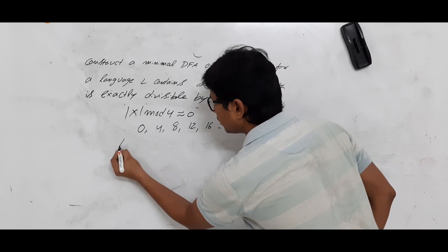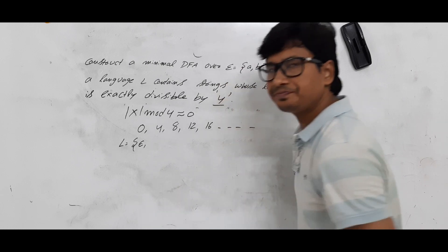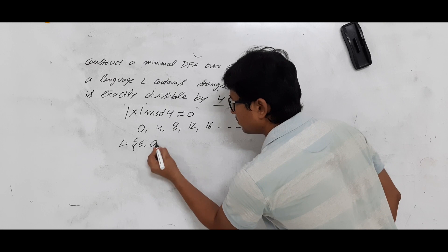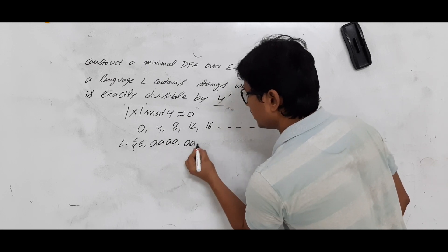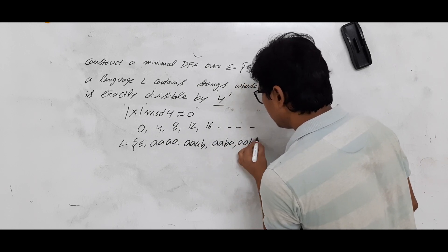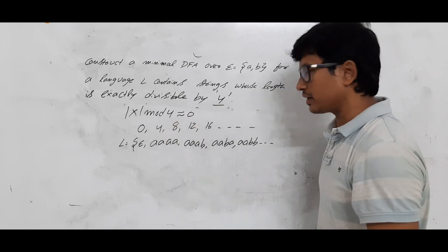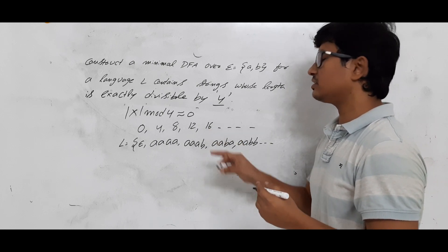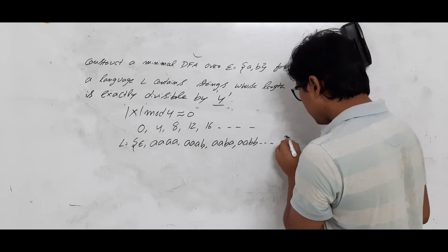The string of length 0 is epsilon. Of length 4, you will get 16 combinations. Some examples are: AAAA, AAAB, AABA, AABB, ABAB, ABBB, and so on. So what I can say about this language: language L is an infinite language.